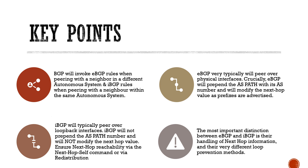The first point to note is that BGP will invoke eBGP rules when peering with a neighbour in a different autonomous system. This is predicated on when you type that neighbour command — if you specify the remote AS to be a different AS than what you have configured, then we're going to be using eBGP rules. On the contrary, iBGP rules will be invoked when peering with a neighbour within your autonomous system — when the remote AS matches the same AS that you're in.